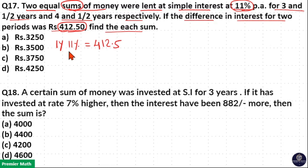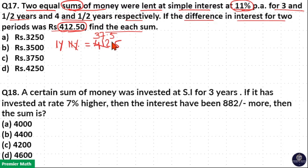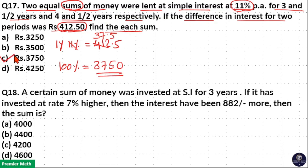At 11% per annum, for 1 year the interest received is equal to 412.5. 11 goes 3 times in 41, remaining 8. 11 goes 7 times in 82, remaining 5. 11 goes 0.5 times in 5.5. So 1% is equal to 37.5. Then 100% is the sum: 100% = 37.5 × 100 = 3750. So option C is your answer.